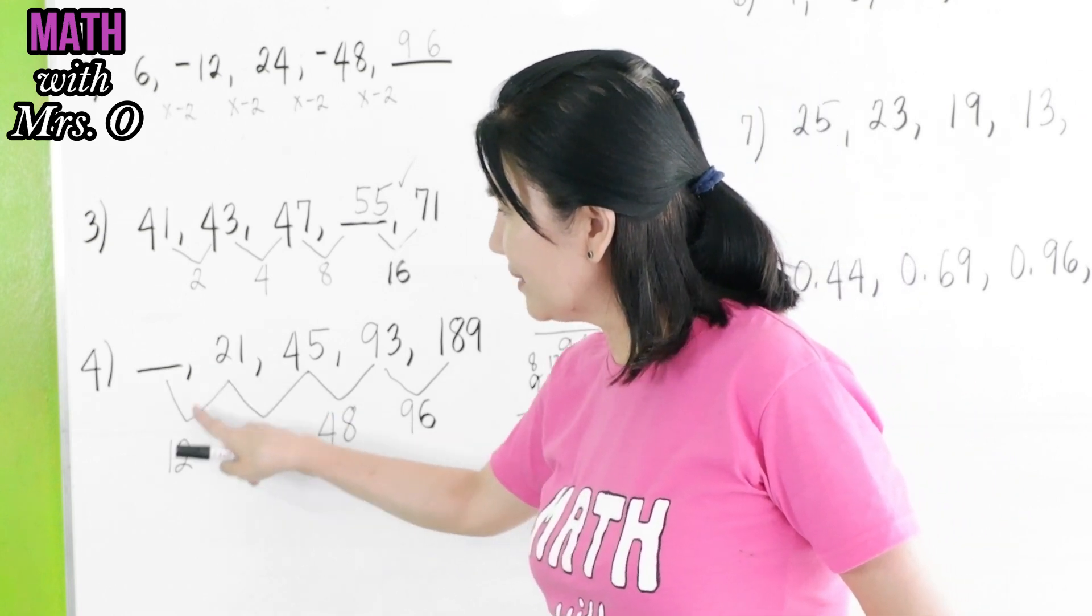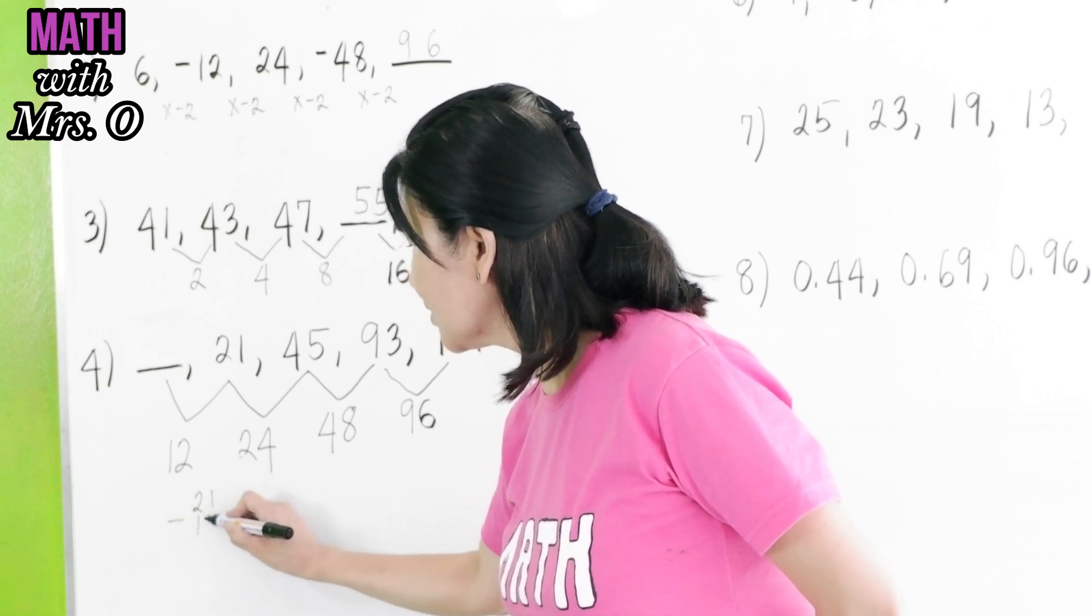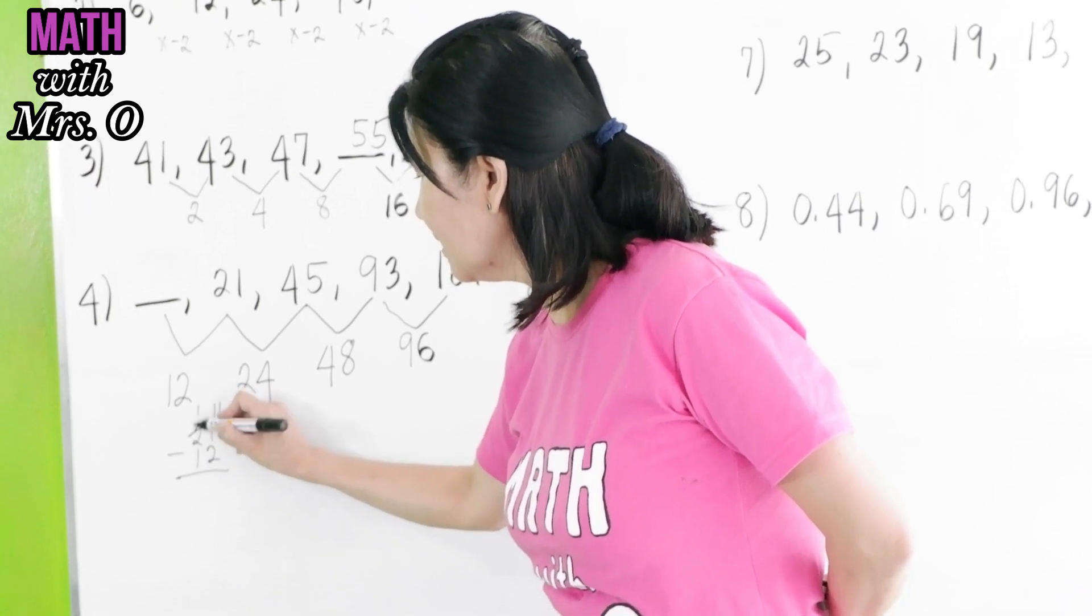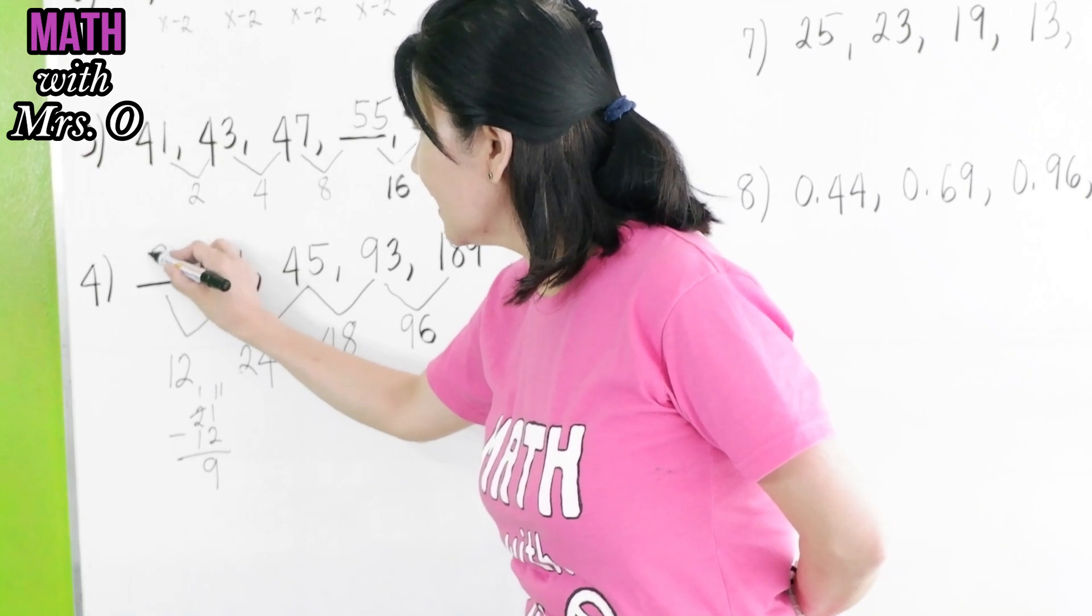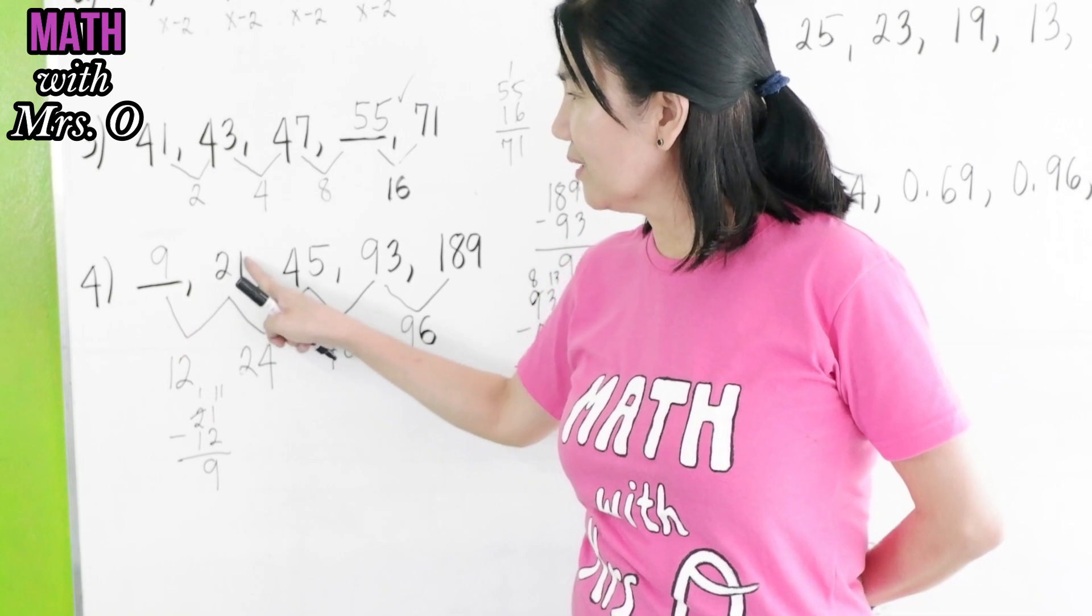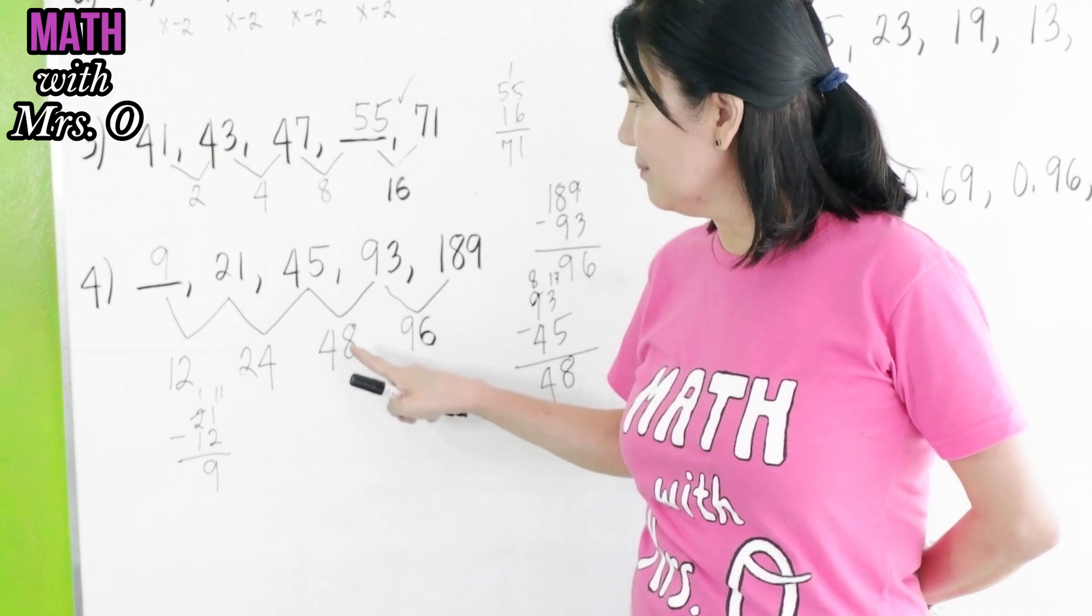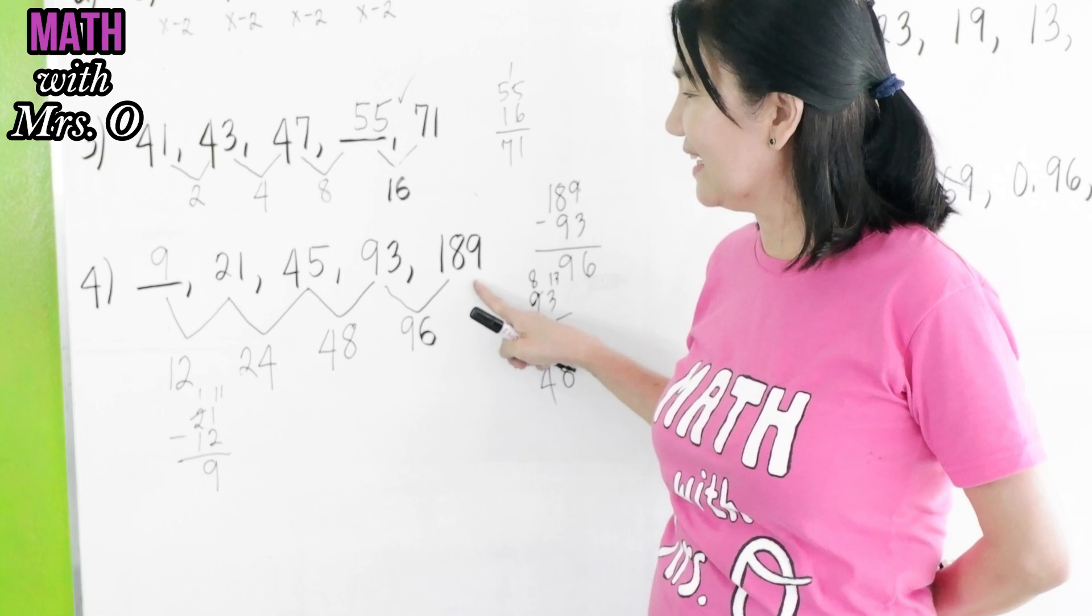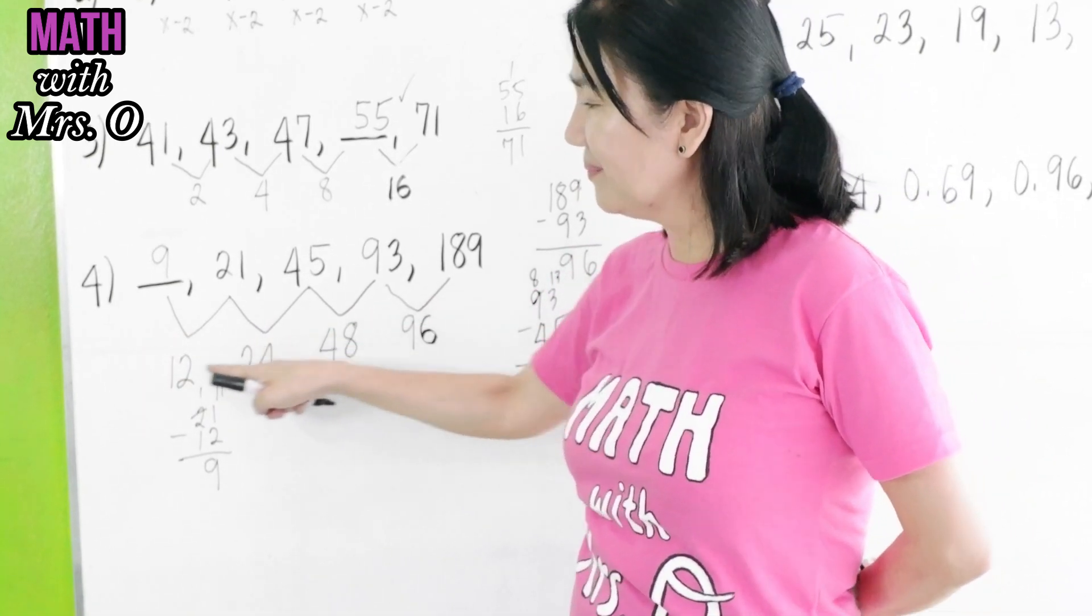So what is the number here? We will have here 21 minus 12, which equals 9. Is the answer 9? Let's check. 9 plus 12 is 21. 21 plus 24 is 45. 45 plus 48 is 93. And 93 plus 96 is 189. As you can see, you have a pattern here in the differences.